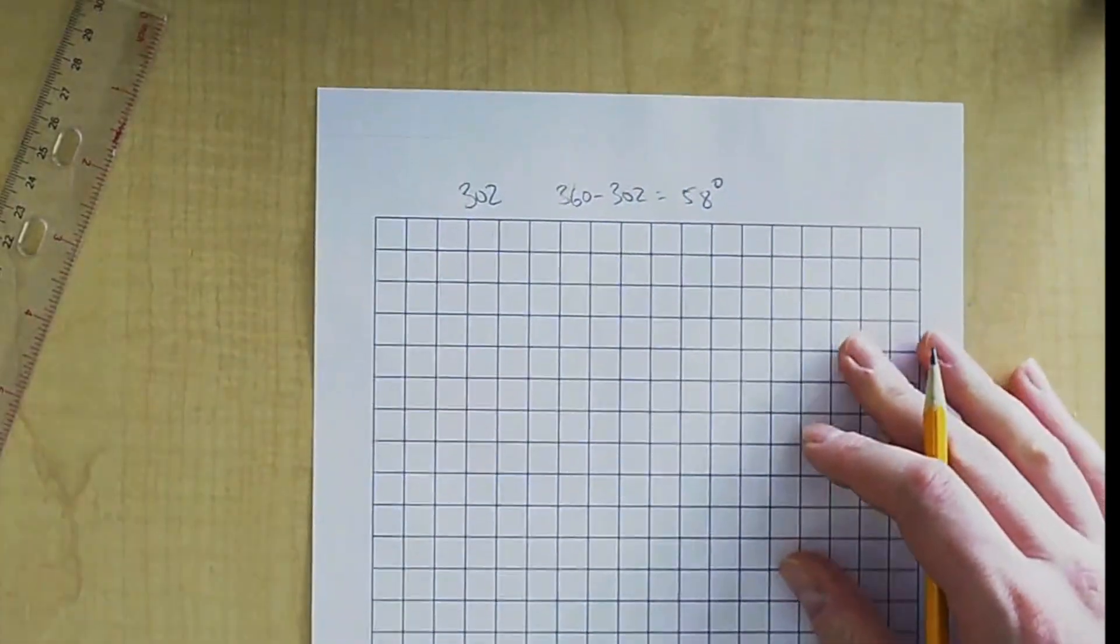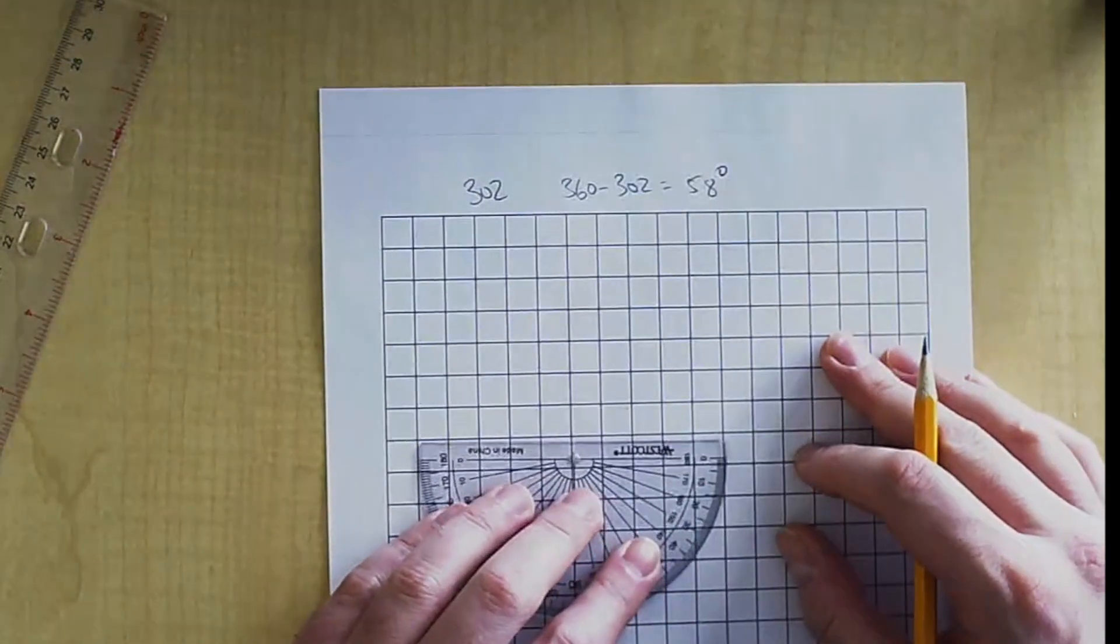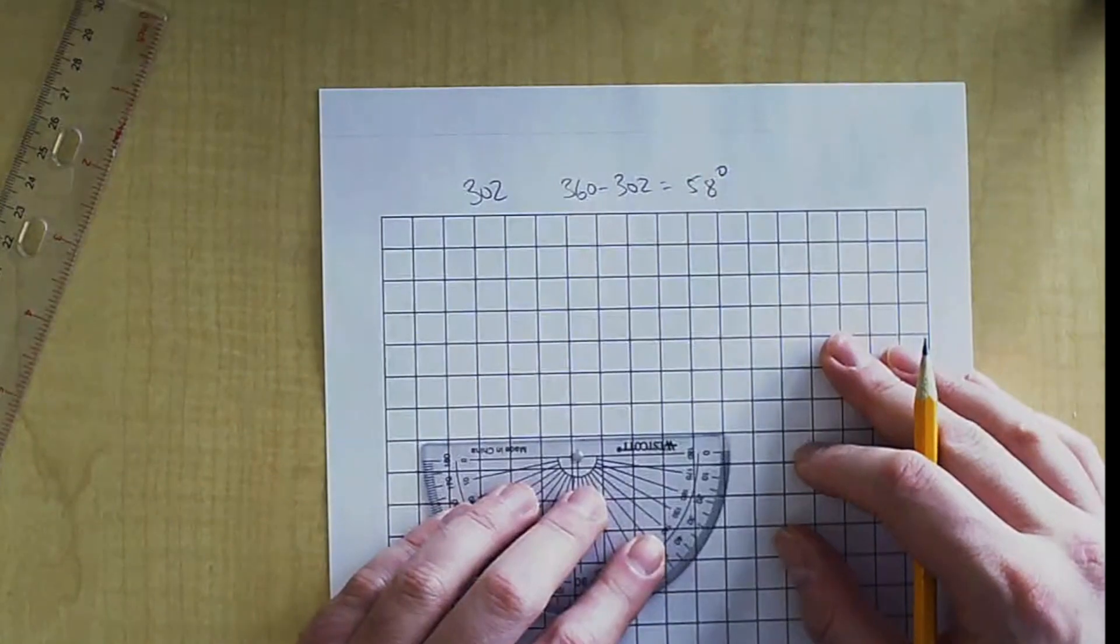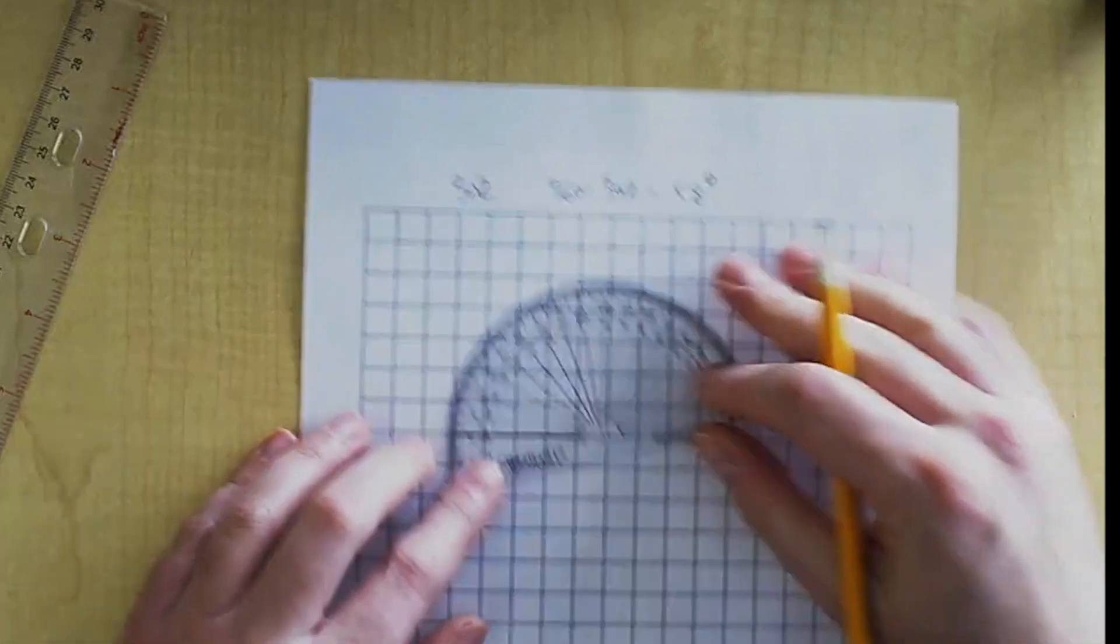So you'll take 360 minus 302. That gives you 58 degrees. Draw the line at the bottom, like this.